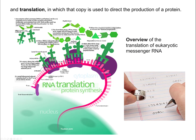Think of it like the decoder rings we used to get from cereal boxes — where numbers translated to letters, and you could send coded messages to friends. These three-base decode regions work similarly: if they match, it signals the ribosome, the transfer RNA goes in, and the amino acid is transferred to the growing protein chain.